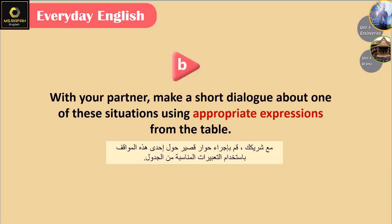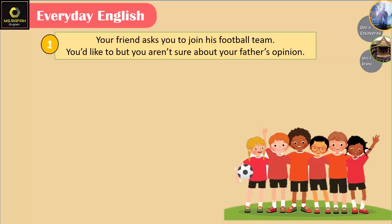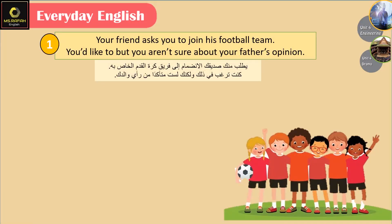With your partner, make a short dialogue about one of these situations, using appropriate expressions from the table. Situation one: your friend asks you to join his football team, but you'd like to — you aren't sure about your father's opinion.